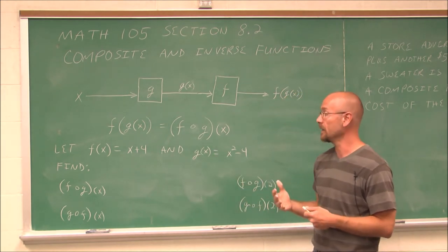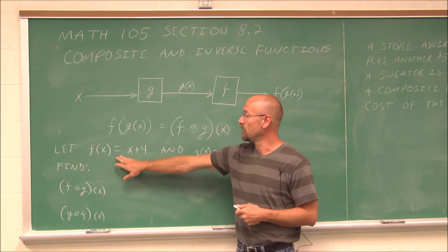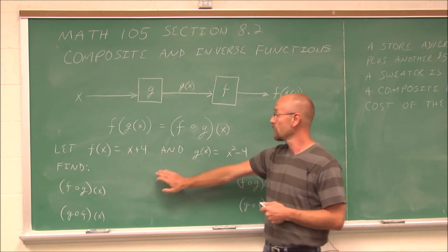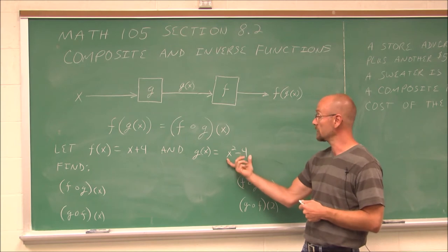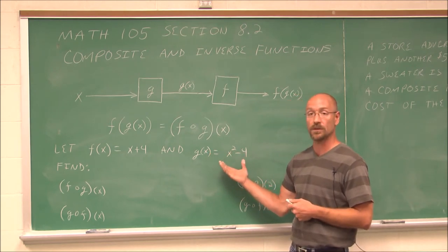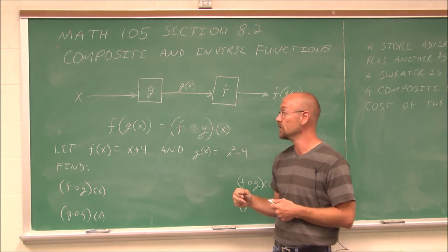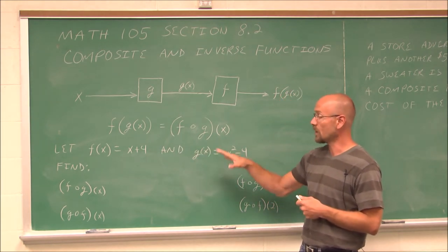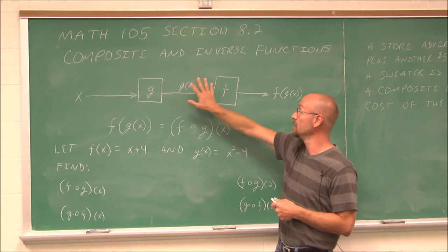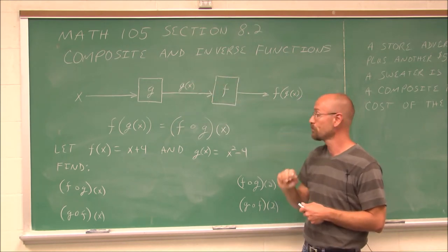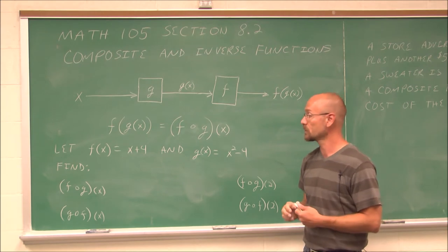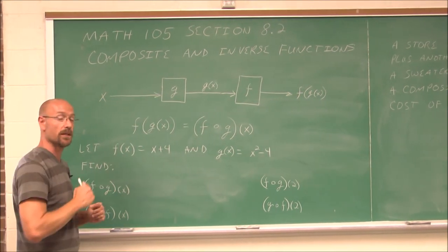So let's see an example. Let f of x equal x plus 4, which is a linear equation with a domain of all real numbers. And g of x equals x squared minus 4, which is a parabola whose domain is also all real numbers. The domain of one function has to be within the other function that we're going to plug it into. In this example, since both have a domain of all real numbers with no restrictions, any value I get from one function I can put into the other.